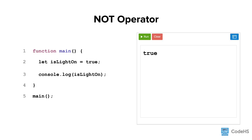Let's take a look at an example. In this program, you can see that the value of isLightOn is set to true. When we print it out, we see a true statement. If we add the not operator in front of the variable, the Boolean expression becomes the opposite of what it was — in this case, the expression evaluates to false. It is important to note that the value of isLightOn is still true, but not isLightOn evaluates to false.